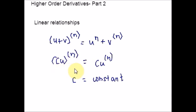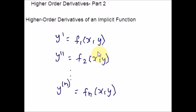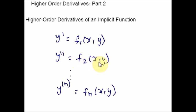Now let me show you higher-order derivatives of an implicit function. The nth order derivative of an implicit function can be found by sequential, nth times differentiation of the equation f(x, y) = 0. At each step, after appropriate substitutions and transformations, we obtain an explicit expression for the derivative depending only on x and y — that is, y' = f₁(x,y), y'' = f₂(x,y), and so on up to y⁽ⁿ⁾ = fₙ(x,y). Please make sure to write parentheses here, otherwise it will be considered as a power. This denotes higher-order derivatives.